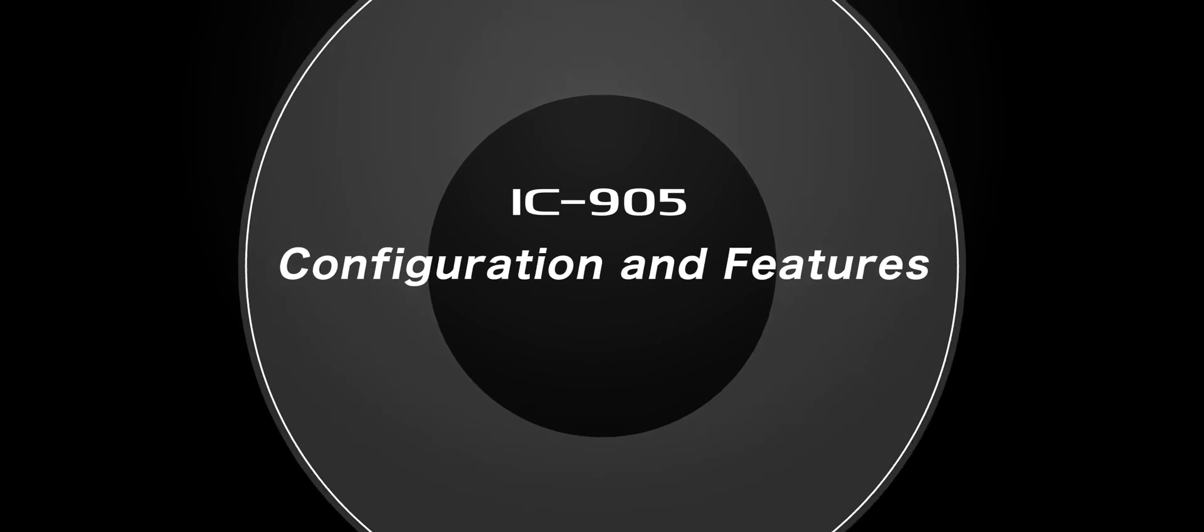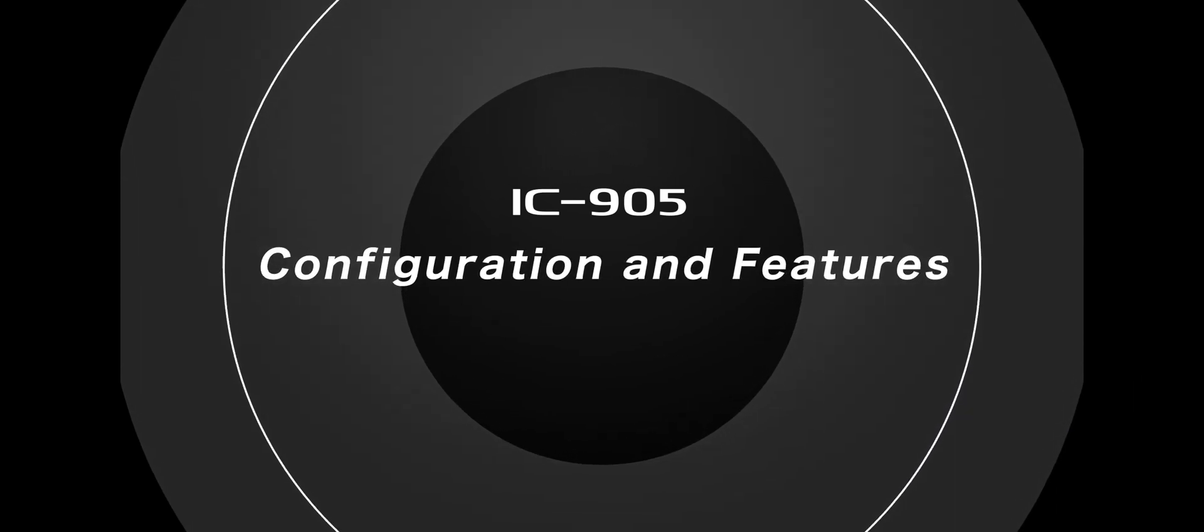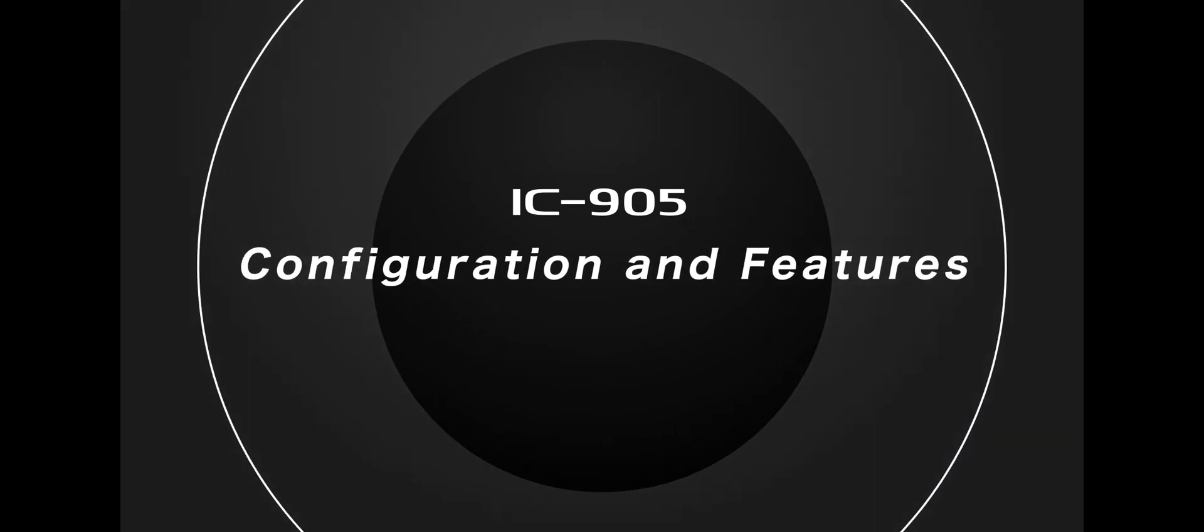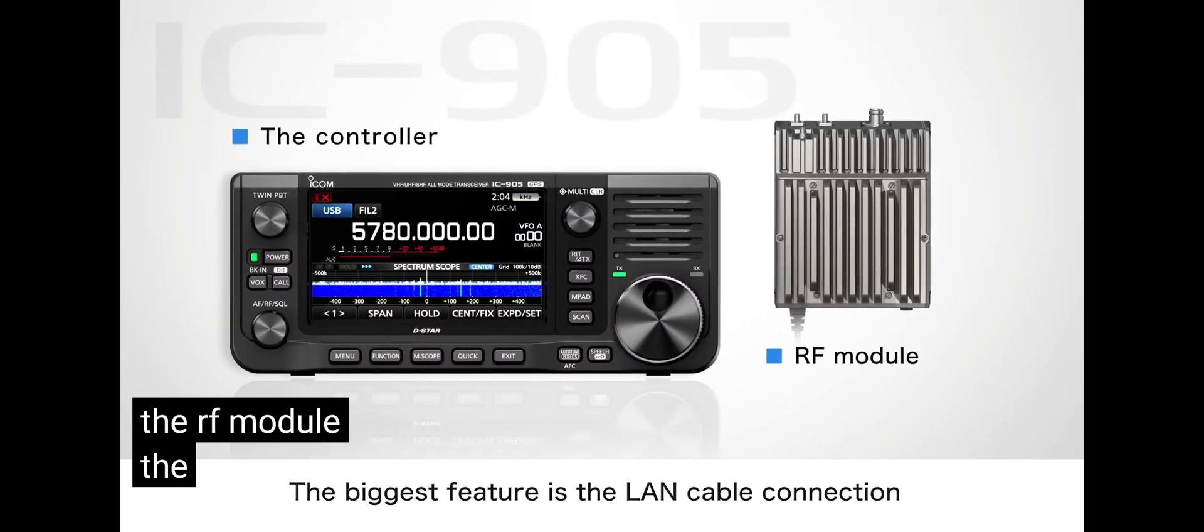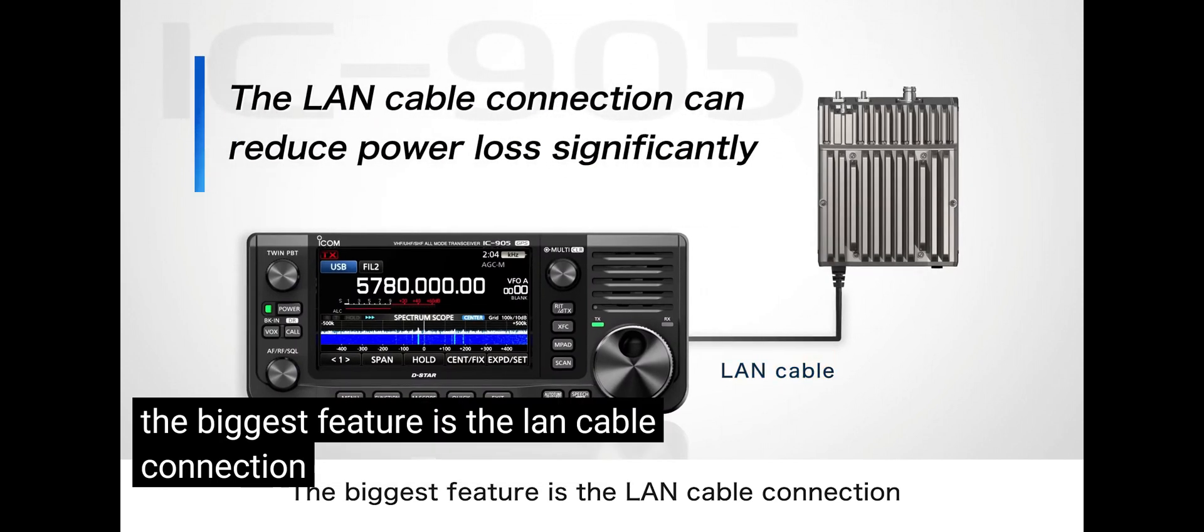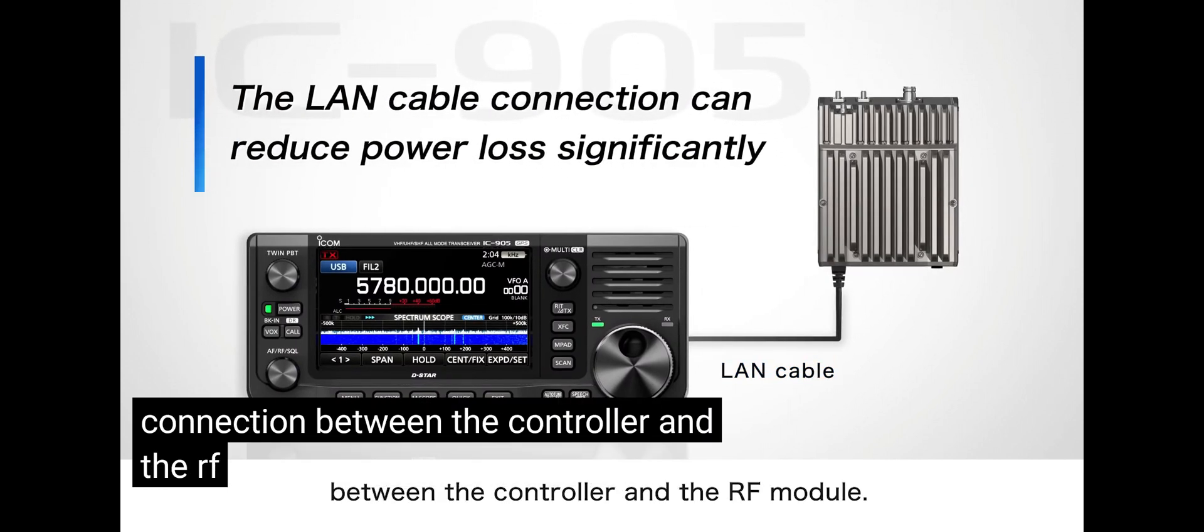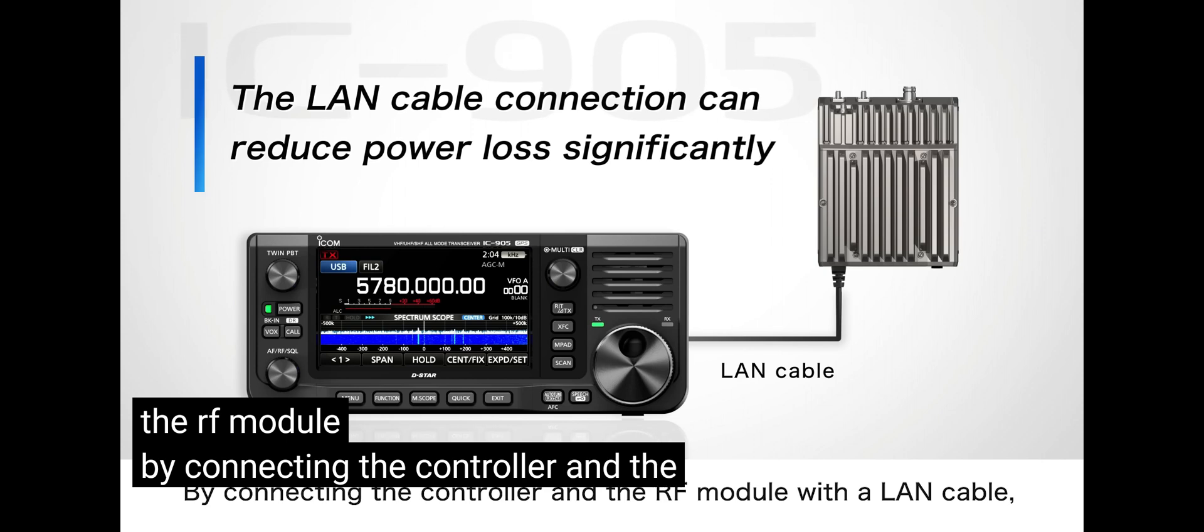It does do ATV, which is interesting. Now it's virtually identical to the ICOM 705. Would you prefer to have VHF, UHF, DSTAR and HF, or do you prefer VHF, UHF, DSTAR and SHF?